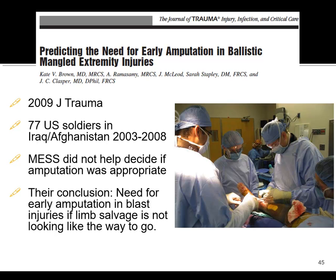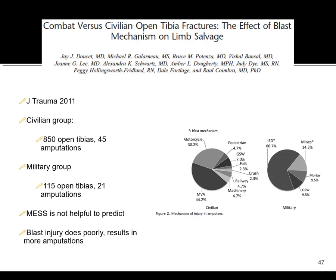There certainly are other types of mangled extremities beyond usual blunt trauma — ballistic and blast injuries represent a different mechanism and different type of contamination. From the military literature, the mangled extremity severity scores were not particularly helpful in predicting amputation. A lot of these blast injuries are better treated with amputation than limb salvage — it's a different type of injury with a much higher degree of soft tissue damage.